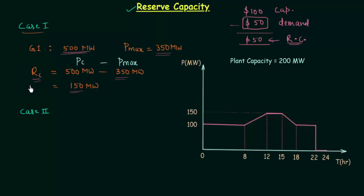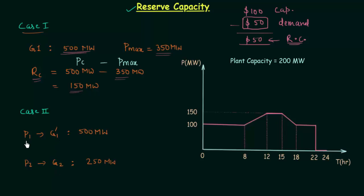In this particular case we took only one power plant. Let's take two different power plants P1 and P2 in case number two. There is only one generator in P1, let's call it G1, and one generator in P2, let's call it G2. The installed capacity of G1 is 500 MW and the installed capacity of G2 is 250 MW. The two plants are working together to supply the power, so the total installed capacity will be 500 MW plus 250 MW, which equals 750 MW. The maximum demand Pmax is equal to 650 MW.